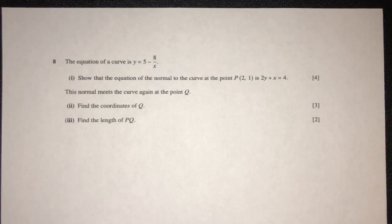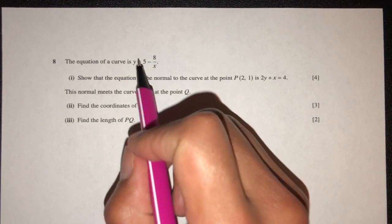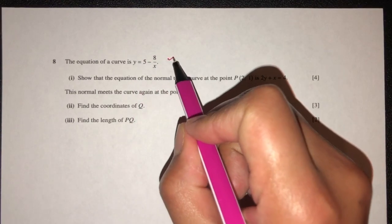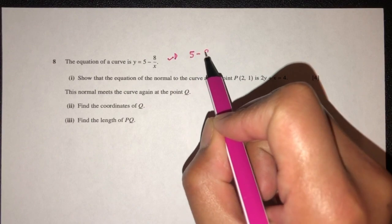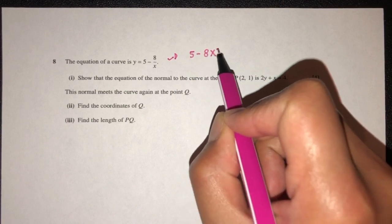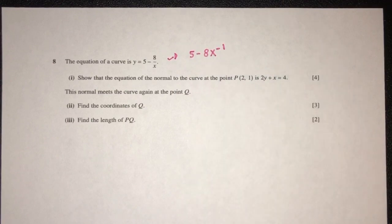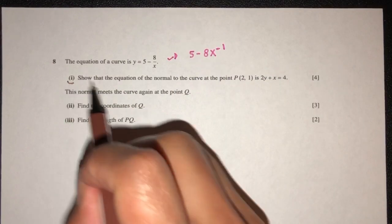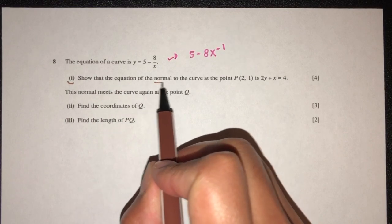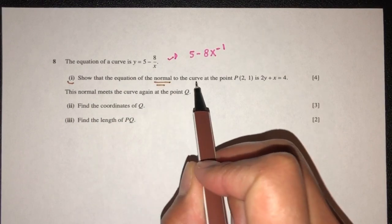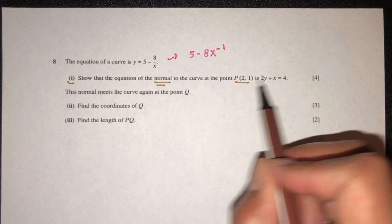Let's move on to the next question. The equation of the curve is given. We can rewrite this as 5 minus 8 over x minus 1. Now part 1: we have to show the equation of the normal to the curve at point P is this.